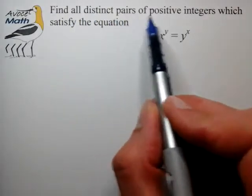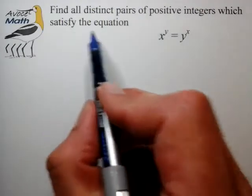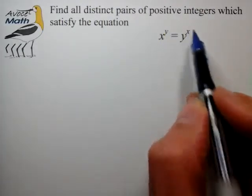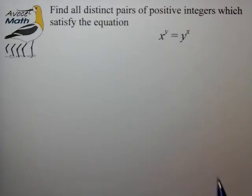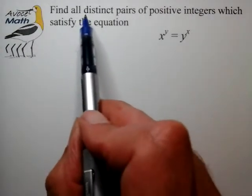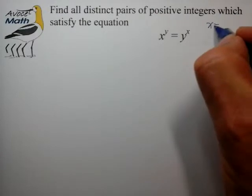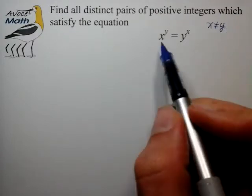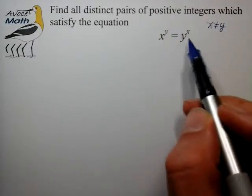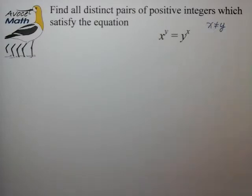We want to find all distinct pairs of positive integers which satisfy the equation x to the y equals y to the x. This is not very well phrased, but in this instance distinct pairs means that we're looking for x not equal to y. So we're not looking for trivial solutions like 2 to the second equals 2 to the second. We're looking for x not equal to y.